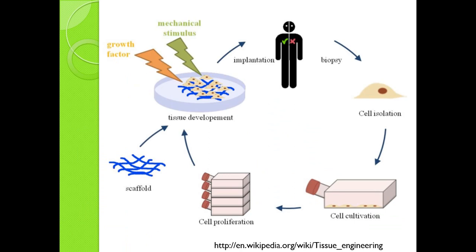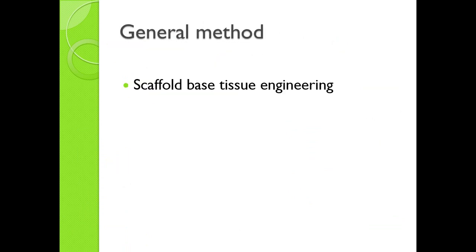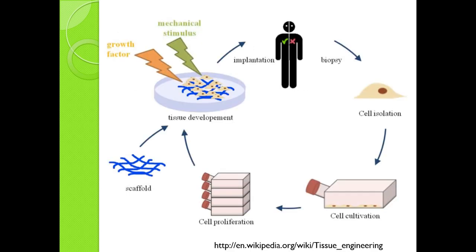We skipped Jayoung's part and now I will tell you several methods of tissue engineering and the process. The general method is scaffold-based tissue engineering. Tissue engineering generally needs a scaffold. This is the process: first, we biopsy and get cells from patients. Next, cell cultivation — we can make many cells from one cell by repeating this process. After we get enough cells, we make tissue by attaching these cells and making them grow on a scaffold.